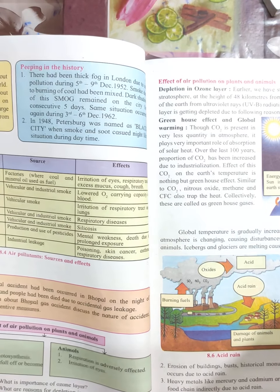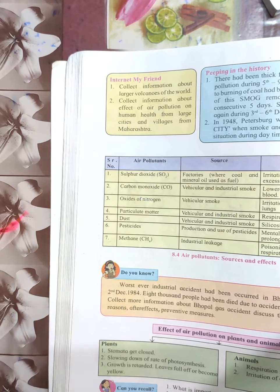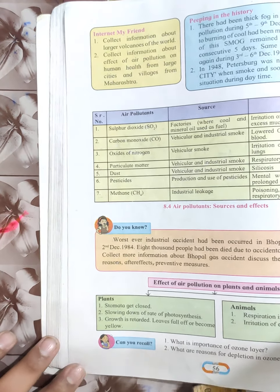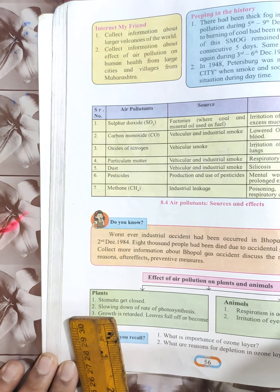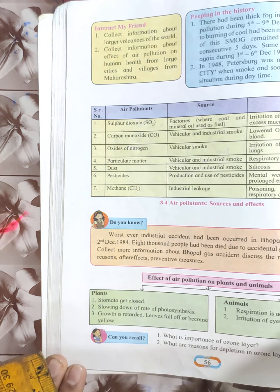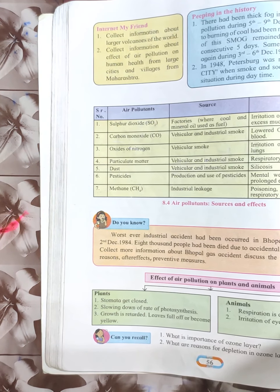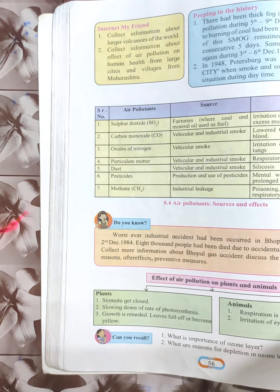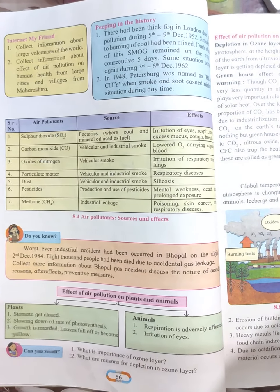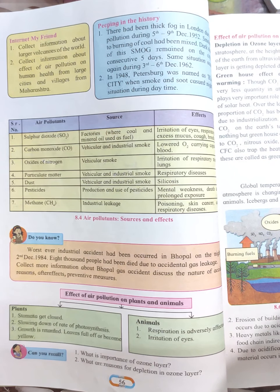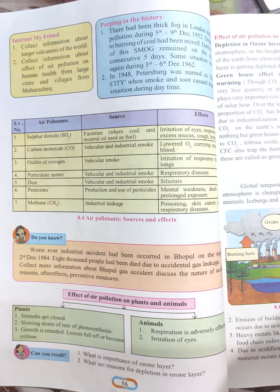Now let's see the effects of air pollution on plants and animals. For plants: the stomata close, the photosynthesis process slows down, growth is retarded, and leaves start falling or become yellowish. For animals: respiration is badly affected and there is irritation of the eyes.